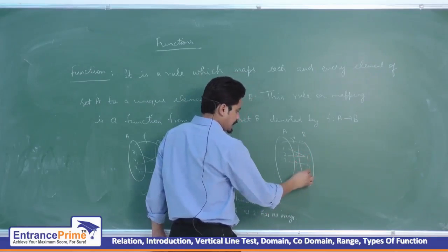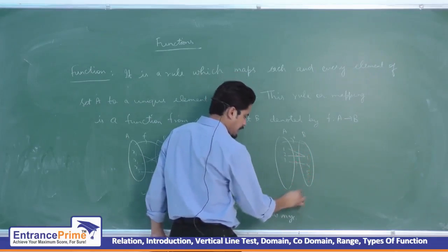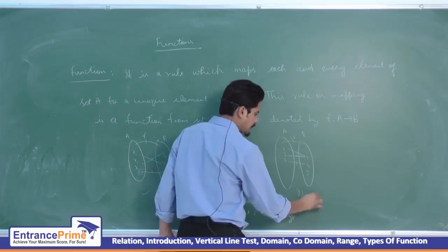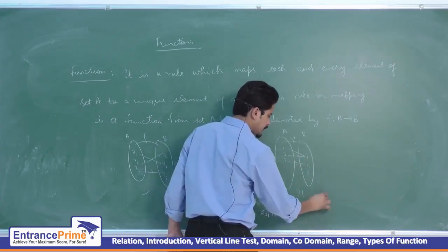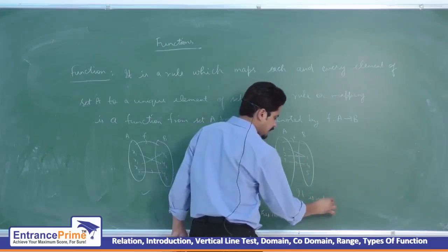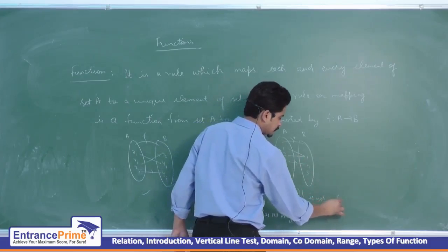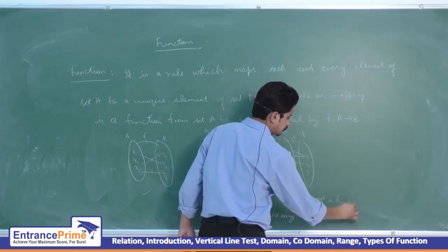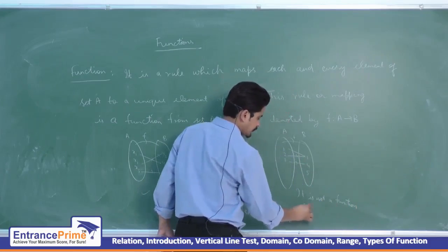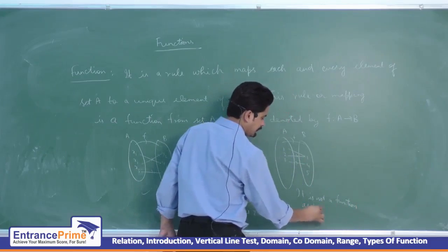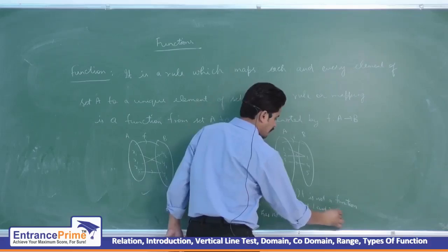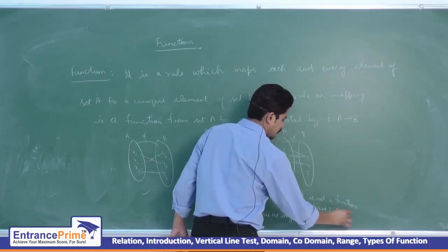Let's take another example. It is not a function, as one and two have the same image — that alone does not disqualify it, but here one element is missing its required unique mapping.